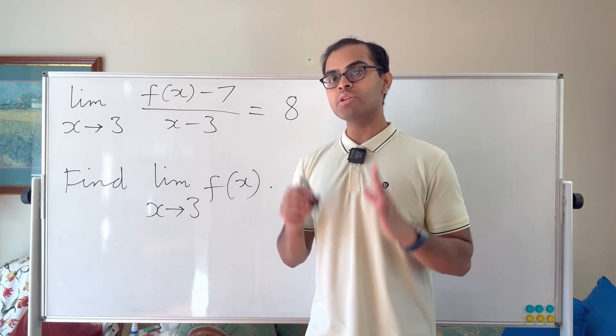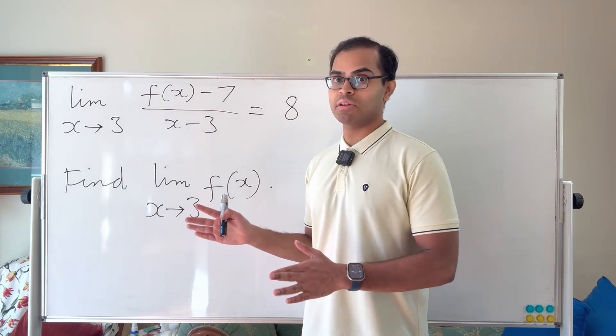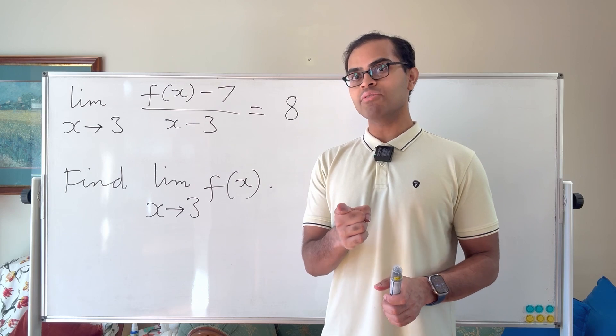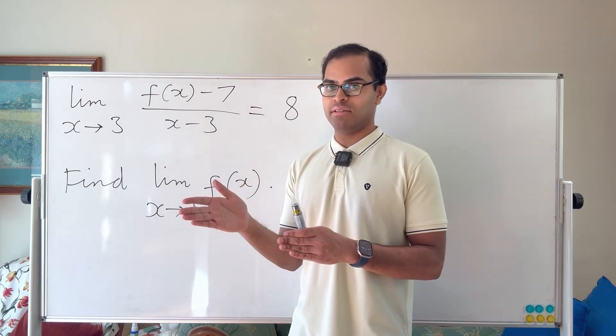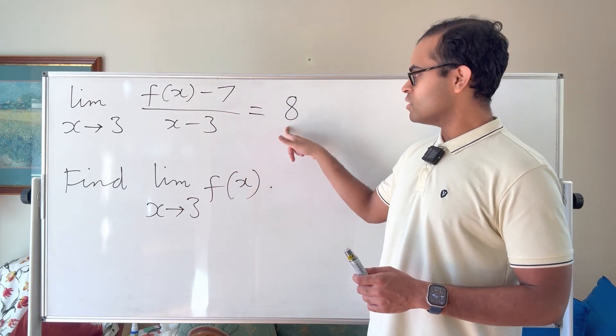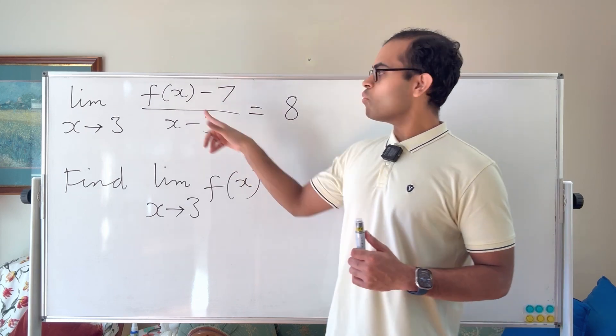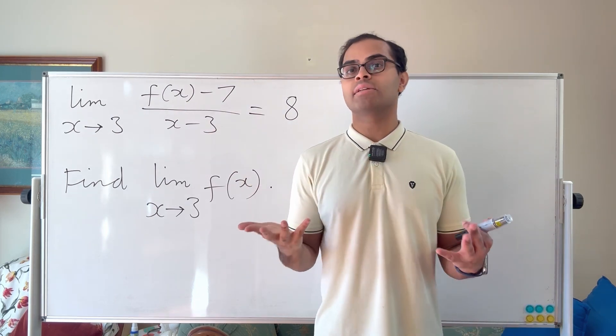Now first I'm going to show you the intuition which isn't a rigorous mathematical argument. Then I'm going to make it rigorous using limit laws. So here we have limit x goes to 3 of this ratio is equal to 8.